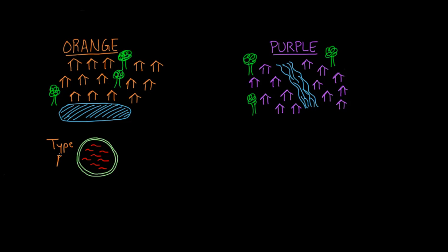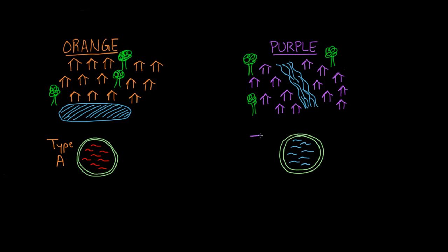If you go over to the purple community, you find quite the opposite. People are also getting the flu, but it's always because of type B. So these people are having influenza type B, and influenza type B also has eight strands of RNA. So we label this community type B.